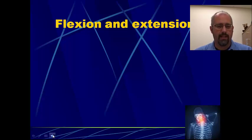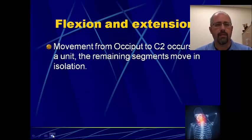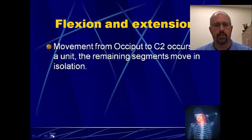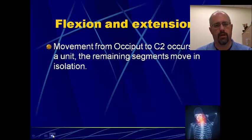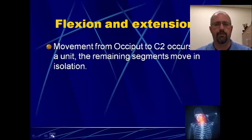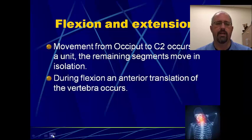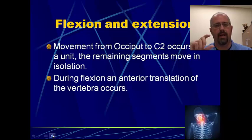When it comes to flexion extension, the movement from the occiput to C2 typically occurs as an entire unit. Between C0 and C1 is where a lot of the flexion extension occurs; C1-C2, not so much. But then C2 on C3, C3 on C4, C4 on C5 and so on right the way down — you get movement together at the top half and then individual motions as you move down through the cervical spine. During flexion, there's an anterior translation of the vertebrae that occurs — as you move forward into flexion, there's an anterior translation and slide of the vertebrae up and over the one below it. When you go into extension, you get that posterior translation, that slide posteriorly of the facet joints one on top of the other.